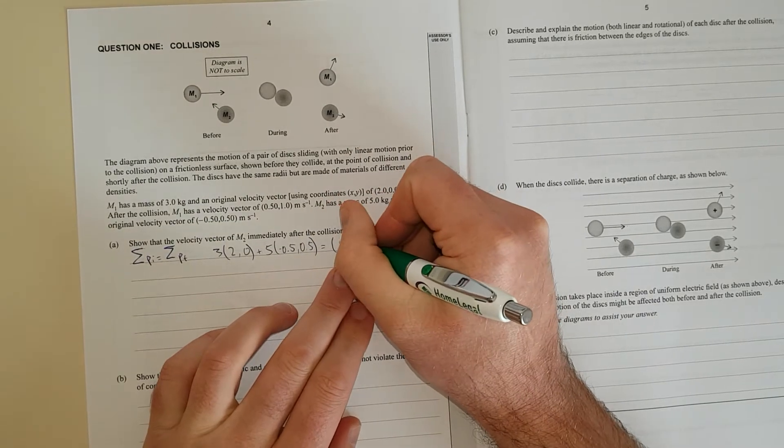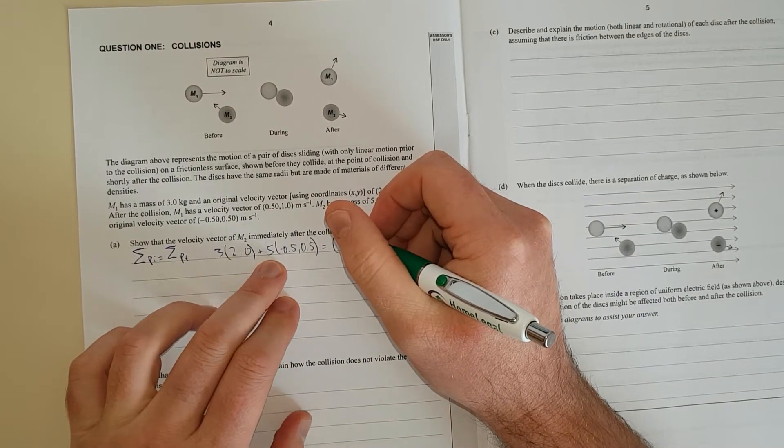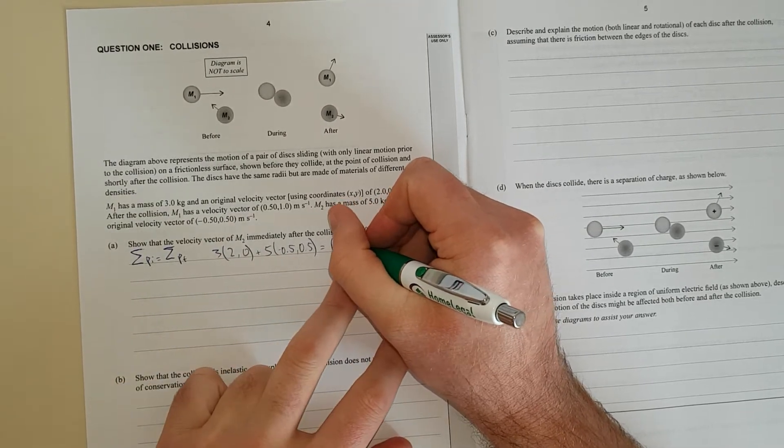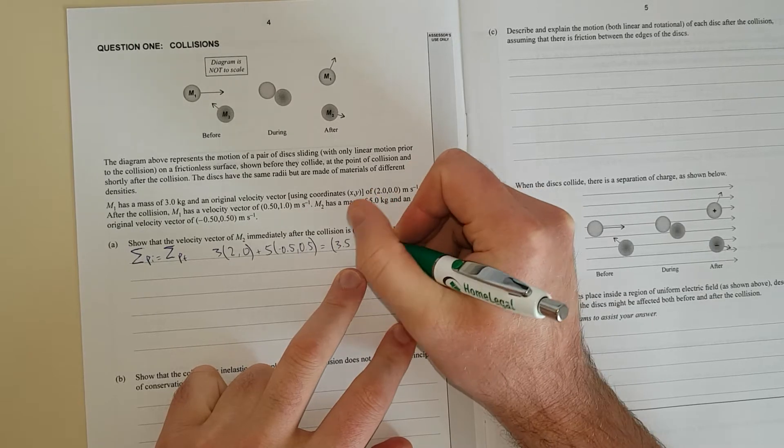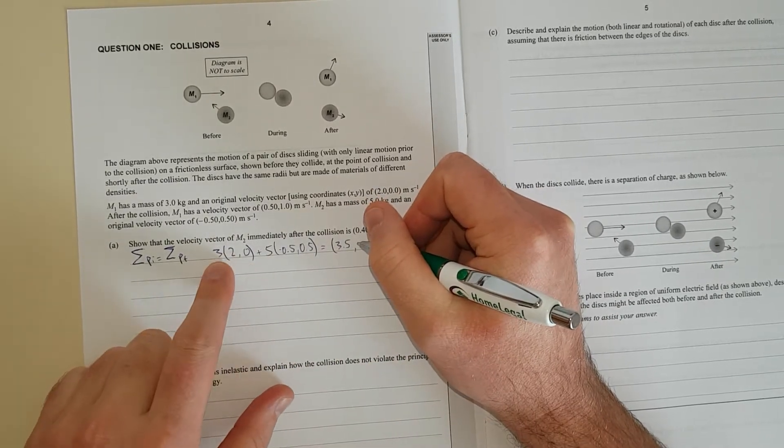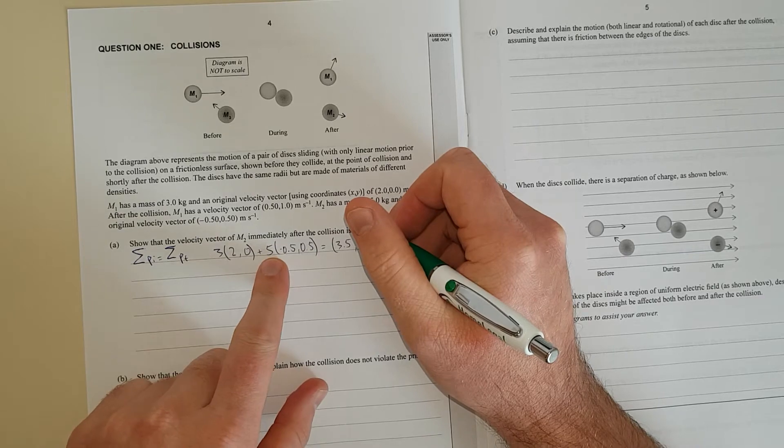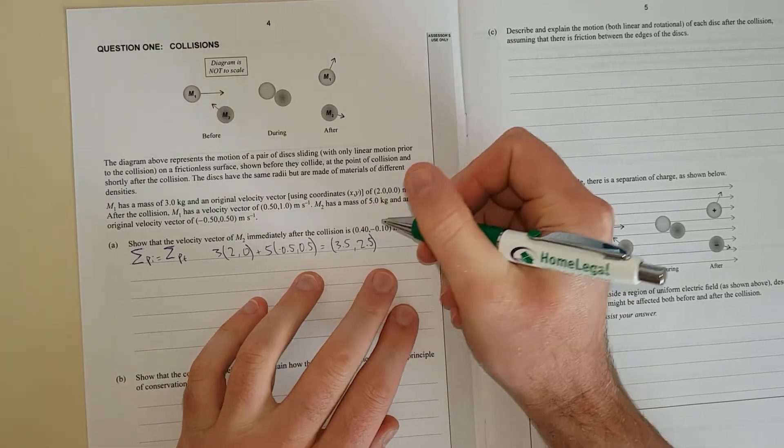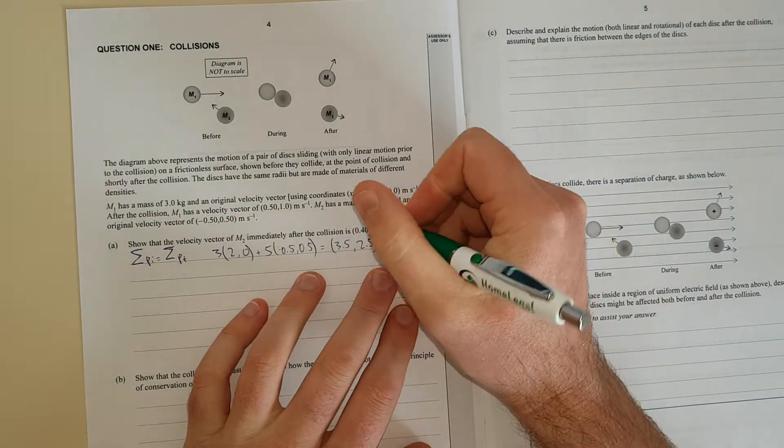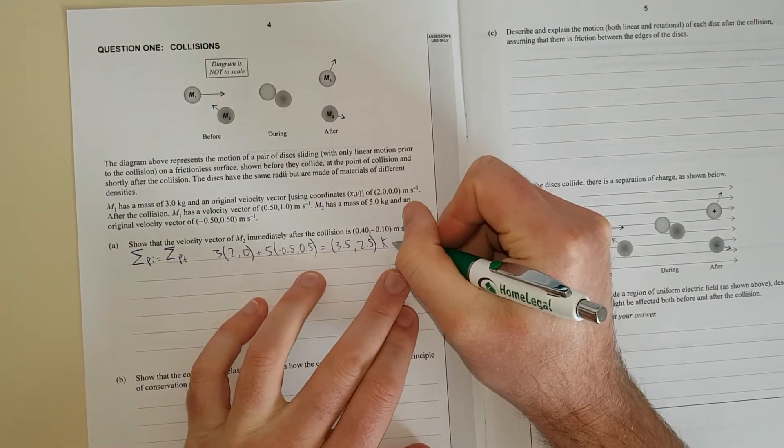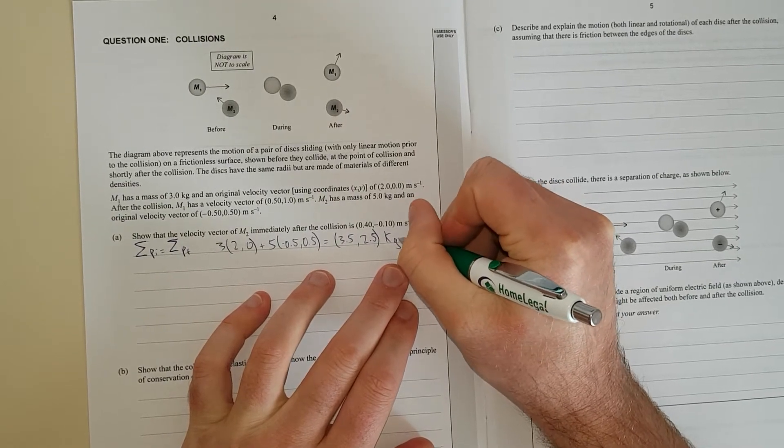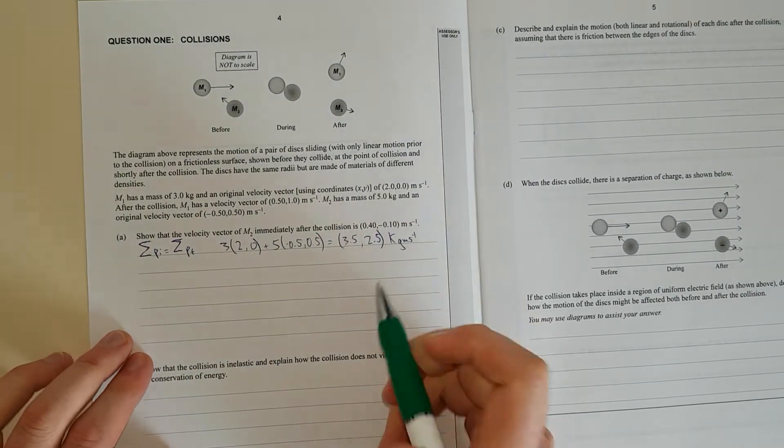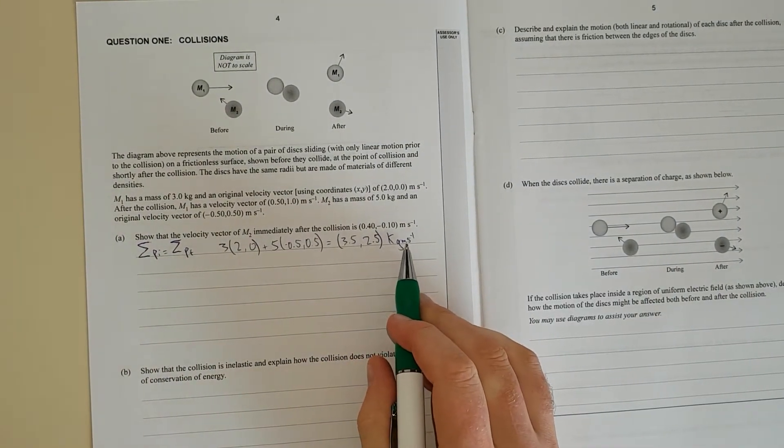If you add all these together, you just go 3 times 2 plus 5 times negative 0.5, and that gives you 3.5. And 3 times 0 plus 5 times 0.5, which is 2.5. This is vector math, which I learned at uni. So this is your initial momentum vector of the system (3.5, 2.5) kg·m/s.